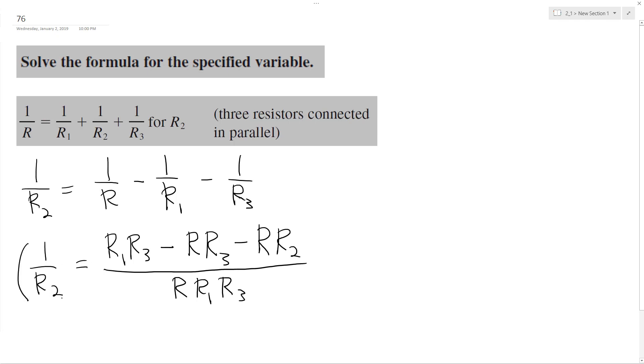So I take the reciprocal of both sides - just flip it, raise to the negative 1. And we get R2 equals R times R1 times R3 over R1 R3 minus R R3 minus R R2.